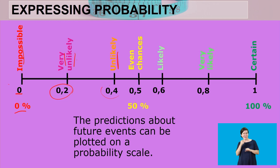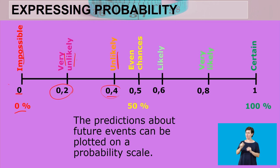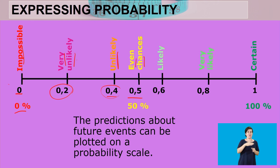Unlikely corresponds to 0.4 — more or less similar to very unlikely in that it is more closer to being impossible than being certain. When we say something is unlikely, it doesn't mean it will not happen and doesn't mean it will happen, but there's a greater chance it might not happen. At even chances, we are talking of 50/50 — there's a 50% chance it might happen and a 50% chance it might not.